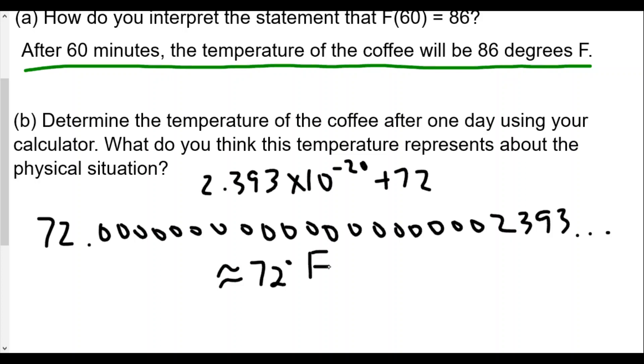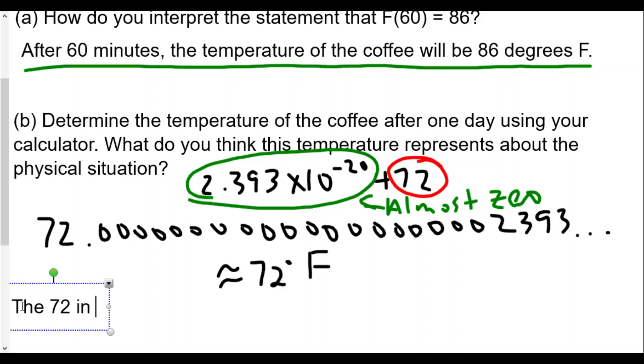What do you think this temperature represents about the physical situation? How come this portion here was practically zero, almost zero, but the 72 stayed the same? What does 72 represent? That would probably be the 72 in the formula would represent the room temperature.